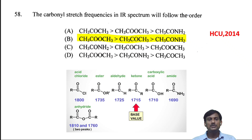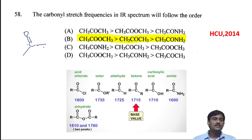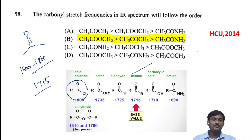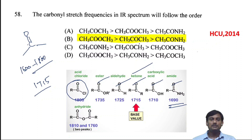The carbonyl stretching frequencies in IR spectrum: the C=O stretching frequency range is 1600–1800 cm⁻¹, with ketone as the basic value at 1715 cm⁻¹. The order from highest to lowest is: acid chloride > ester > aldehyde > ketone > carboxylic acid > amide. Among ester, ketone, and amide, the order is ester > ketone > amide.